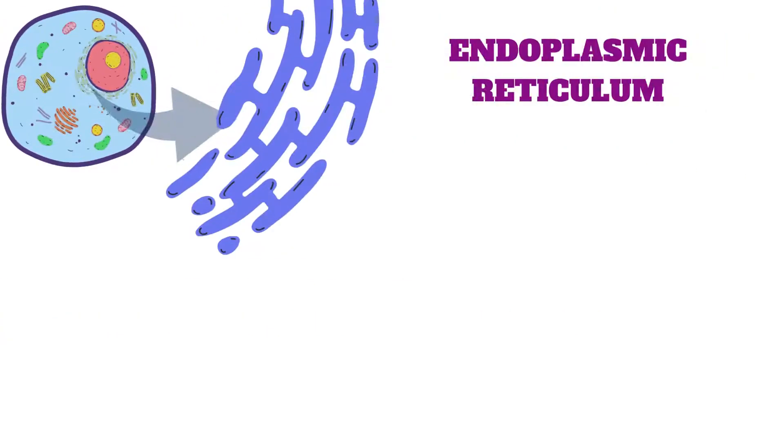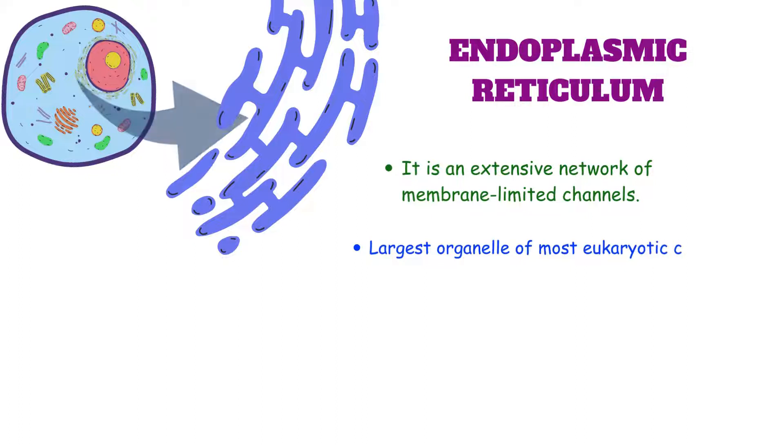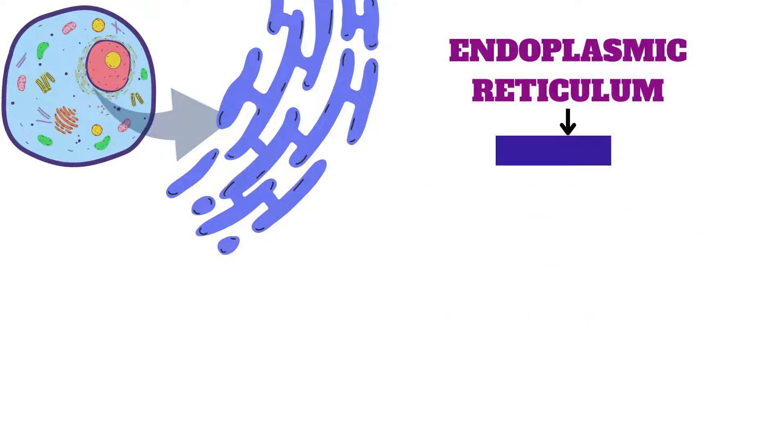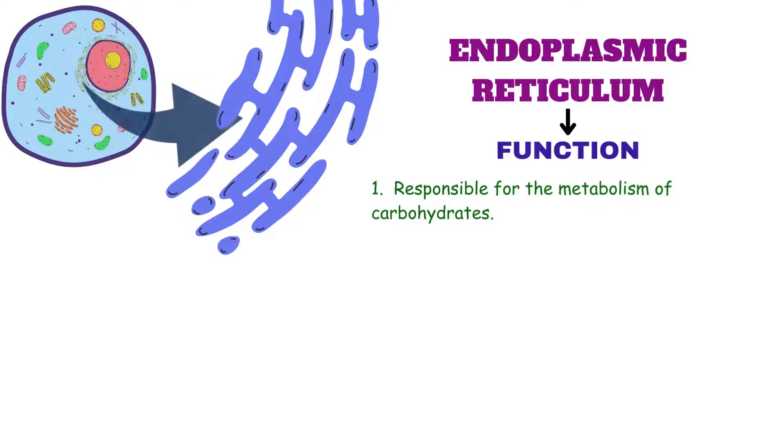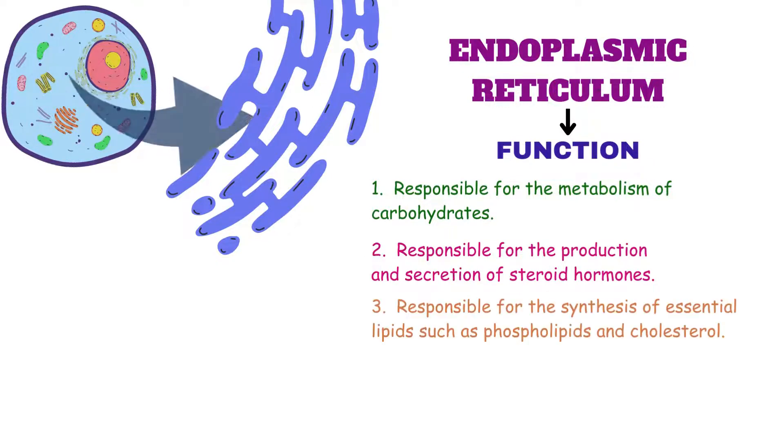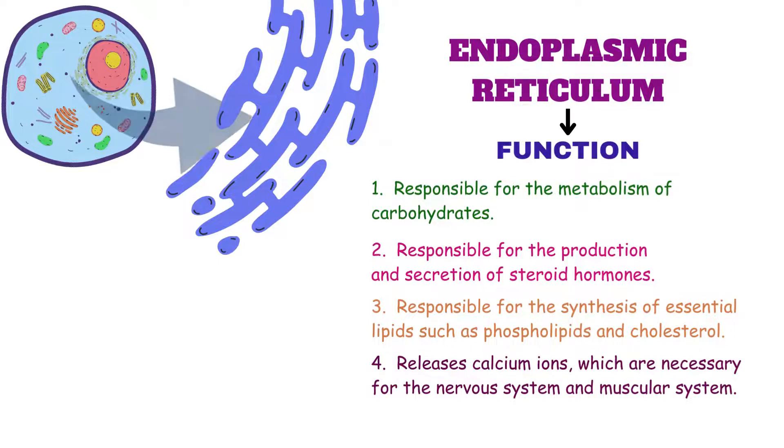Endoplasmic reticulum is an extensive network of membrane-limited channels. It is the largest organelle of most eukaryotic cells. It is present in all eukaryotic cells except sperm and red blood cells. Functions of endoplasmic reticulum are: they are responsible for metabolism of carbohydrates, responsible for production and secretion of steroid hormones, responsible for the synthesis of essential lipids such as phospholipids and cholesterol. Endoplasmic reticulum stores and releases calcium ions which are necessary for the nervous system and muscular system.